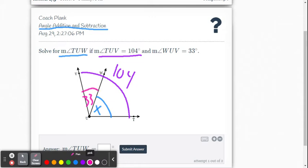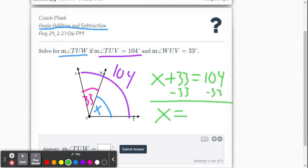We're going to use the angle addition postulate to solve this problem. So x plus 33 has to equal 104. We subtract 33 from both sides and get x equals 71.